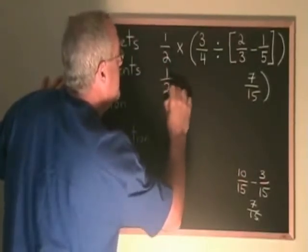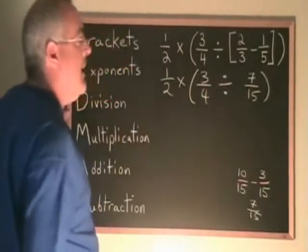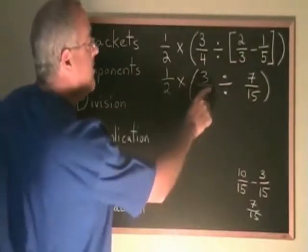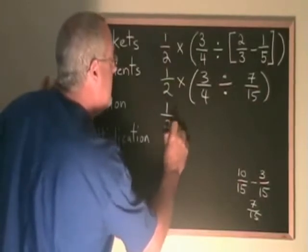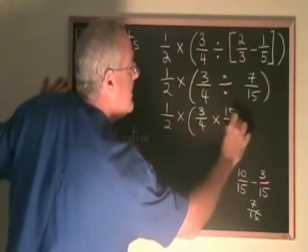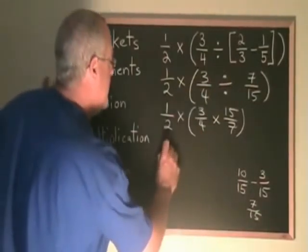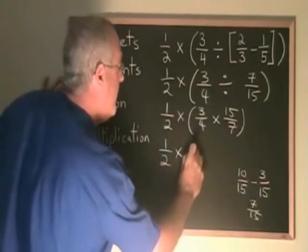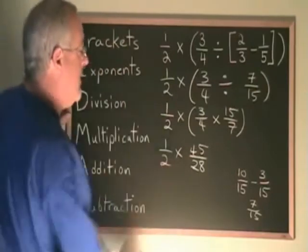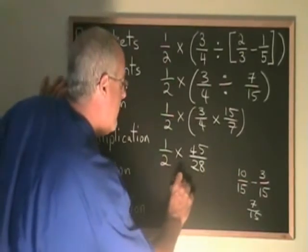I copy down the rest of the question. And now again, the bracket is going to force me to do this division before the multiplication. 3 quarters divided by 7 fifteenths can also be written as 3 quarters times 15 sevenths, turning the second fraction upside down and multiplying. That gives us 45 over 28. Now finally we can do our multiplication, and when we multiply these fractions we get 45 over 56.